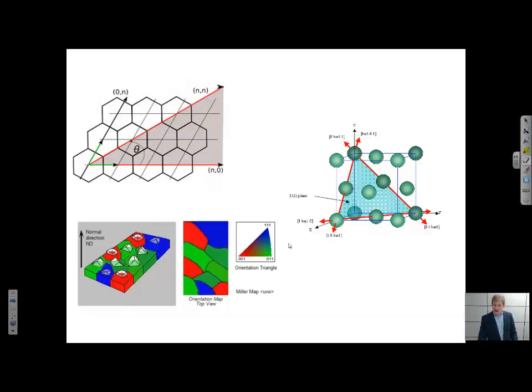One example is if I'm measuring the electrical transport in graphene. If I measure it in one direction this way, or in this direction, I would get the same result. However, if I measure it in some other direction, I'm going to obtain different physical properties. That's what we call an anisotropic material.